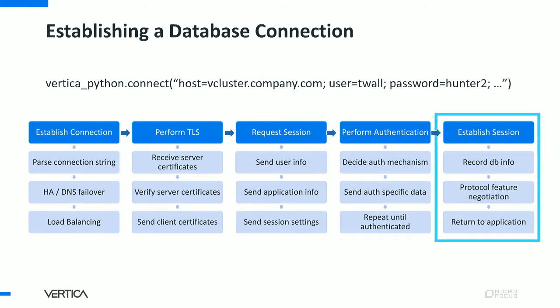Finally, Vertica trusts you and lets you in. You establish a session in Vertica and might do some note-keeping on the client side — logging some information, recording what version of the database this is, doing some protocol feature negotiation. So if you connect to a version of the database that doesn't support all these protocols, you might decide to turn some functionality off. After all that, you can return from this API call and your connection is good to go.